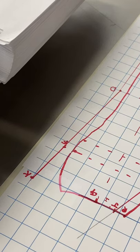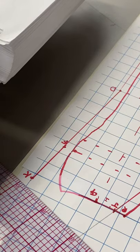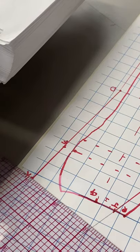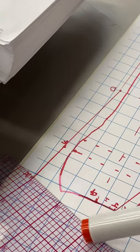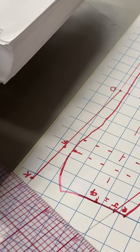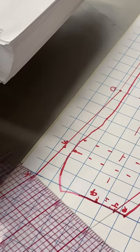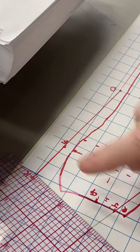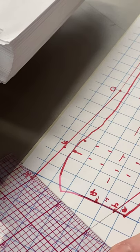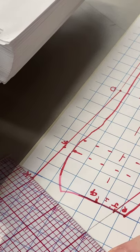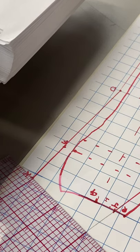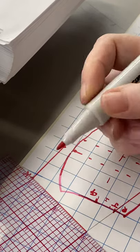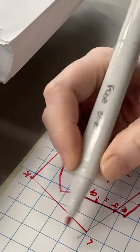This is where the gridded ruler comes in handy. You are going to set that up at a perpendicular on your guideline here and just slide your ruler up and down until it intersects with Kay. Then you are going to draw that line in, and this point becomes L.